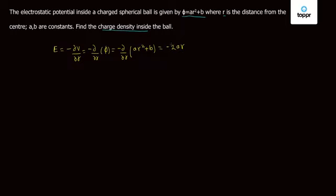We know the electric field inside a spherical ball as a function of r. Now, by using Gauss law, we get electric field at distance r within the sphere into 4 pi r squared is equal to the flux enclosed.